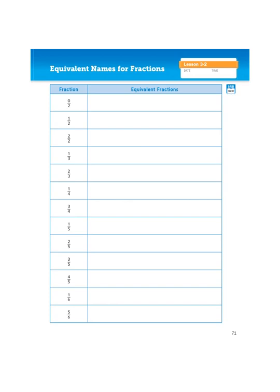What you see here is a table and it's asking you to come up with equivalent fractions for the fractions that are listed in the column on the left. Equivalent just means the same value — so how can I represent a fraction that equals the value in the left?